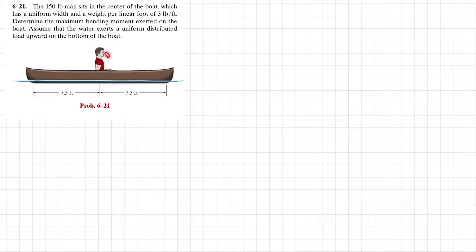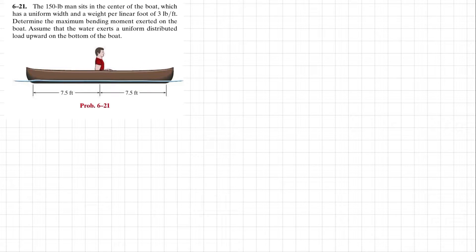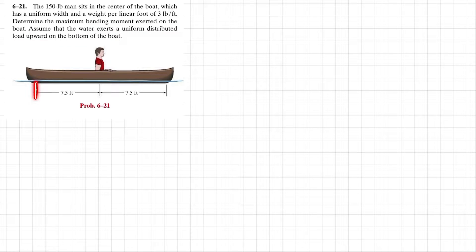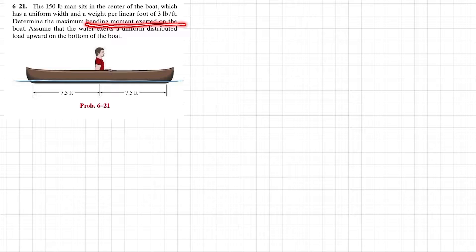From the figure, this man is 150 pounds sitting in the center. Due to this boat there is a uniformly distributed load of 3 pounds per feet that is given. It is also stated that water exerts a uniform distributed load upward on the boat as a reaction. So we have to determine the maximum bending moment. Let's start and solve this problem.